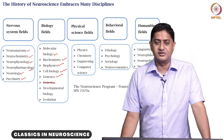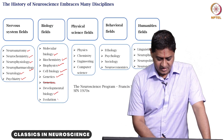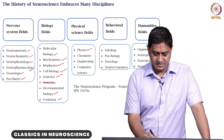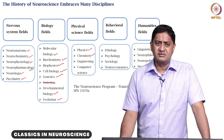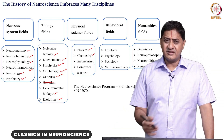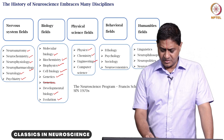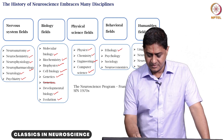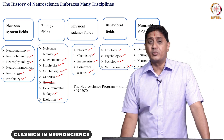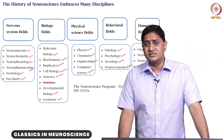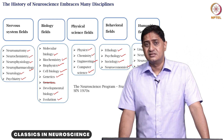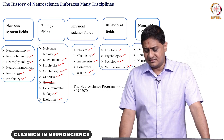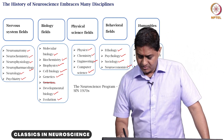Genetics is so important we deserve to mention it twice. There is also developmental biology and evolution. Within the physical sciences, there is physics, chemistry, engineering, and computer science — the latter two are becoming fields on their own, but are increasingly relevant for studying neuroscience. In the behavioral fields, we have ethology, psychology, sociology, and neuroeconomics. Knowledge from neuroeconomics is now informing how corporations design their products and ads. In the humanities, there is neurolinguistics, neurophilosophy, and the neuroscience of politics and religion.